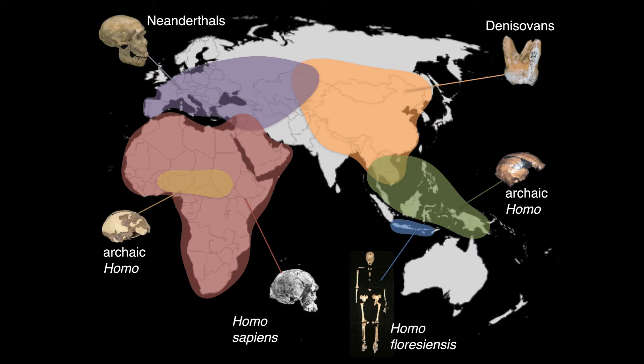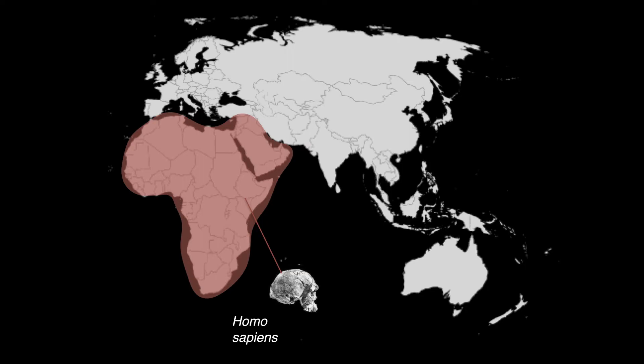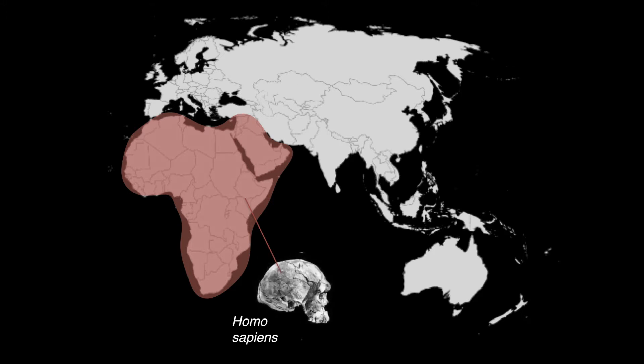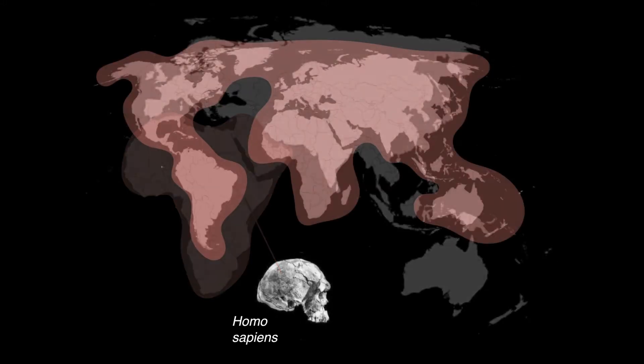The situation changed around 50,000 years ago, when some modern humans came out of Africa, met other humans, interbred a little, and then all the other humans went extinct. So what happened? Why are we the only humans left?